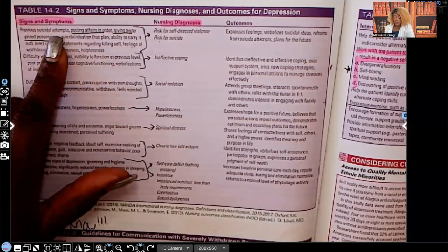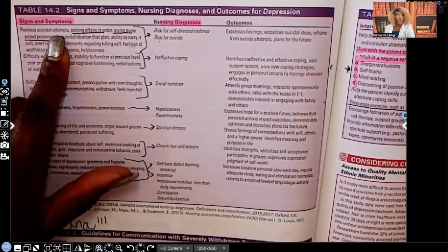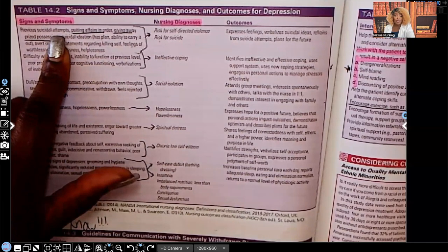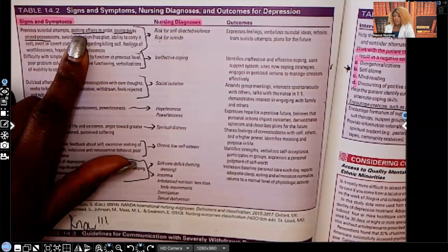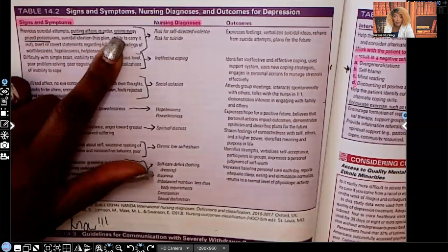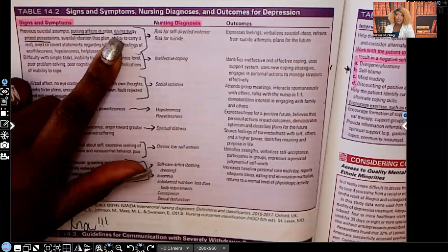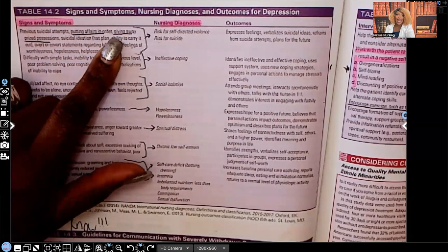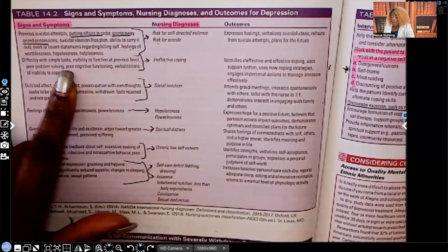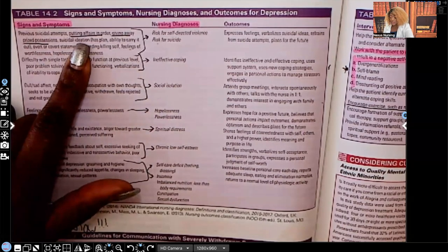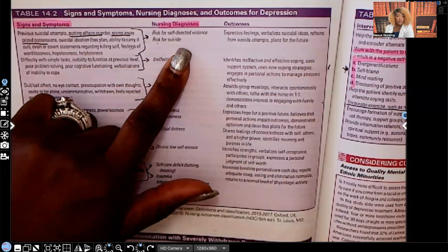Previous suicidal attempts — any patient who has attempted suicide before is at very high risk for another attempt. Putting affairs in order, such as wanting a will or making amends with estranged family. Giving away prized possessions — on NCLEX this often appears as a teenager giving away their favorite necklace or clothing. For these signs and symptoms, your nursing diagnosis is risk for self-directed violence or risk for suicide.